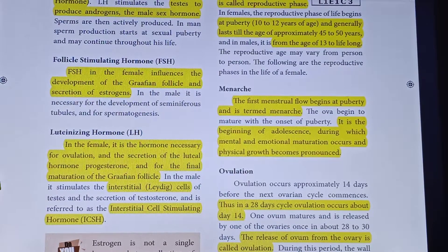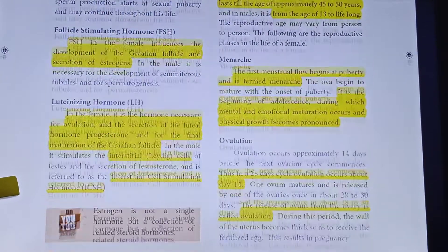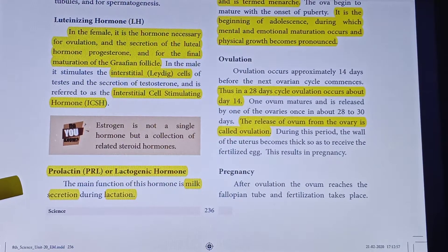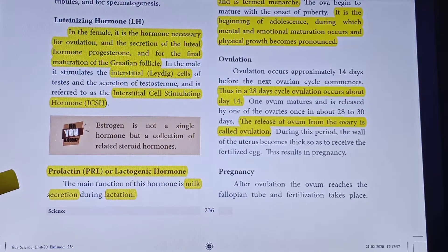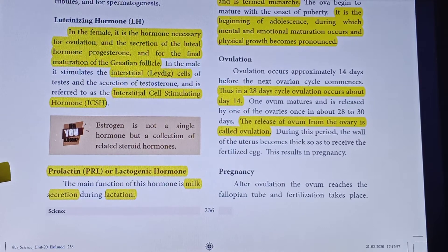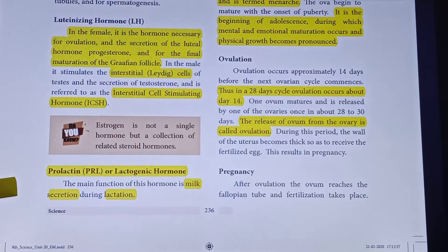Prolactin, or lactogenic hormone, is secreted in the female body. The main function of this hormone is milk secretion during lactation. After delivery, during the lactation period, this hormone is useful for milk secretion.